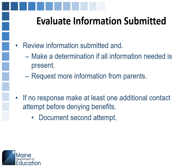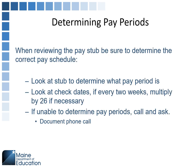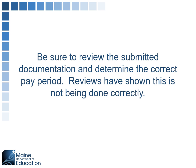Determine the pay period — sometimes this is not easy when reviewing documentation. Look at the pay stubs; see if it tells you whether it's every two weeks or twice a month. If you can't figure out the pay periods, call and document the phone call. Reviews have shown that this is not being done correctly, so be sure to review submitted documentation and determine the correct pay period. Don't hesitate to ask the family for clarifying data.